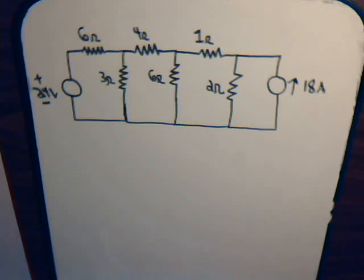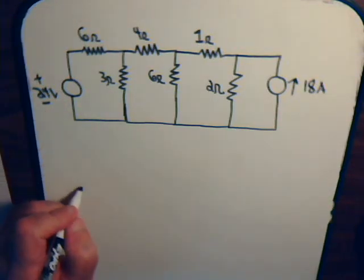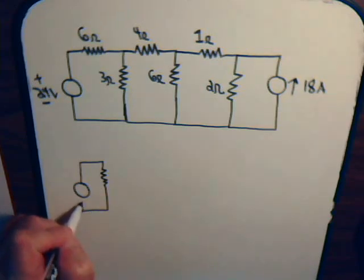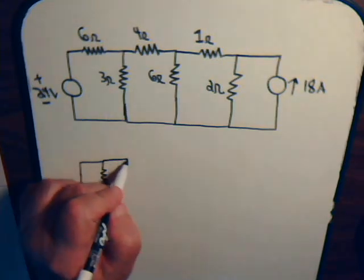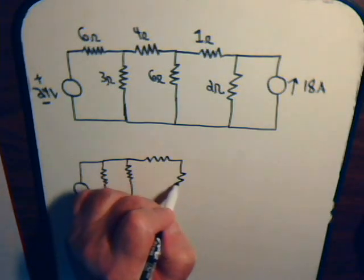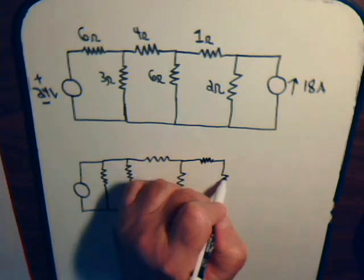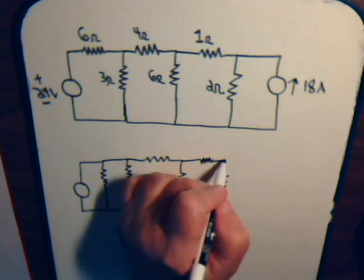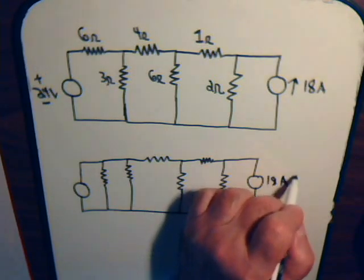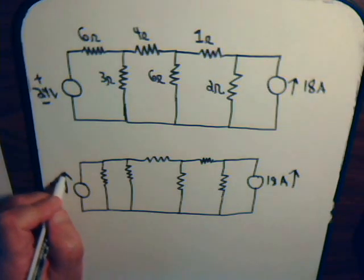We can redraw the circuit, just operating on this end of it now. Here we have a current source of 4 amps, then in parallel with that is the 6 ohm resistor, then the 3 ohm resistor, then the 4 ohm, and the 6 ohm resistor. On the other end we have 18 amps flowing in this direction, and 4 amps flowing in this direction.